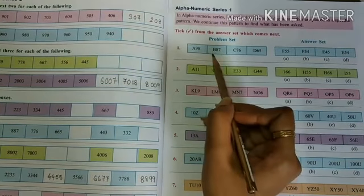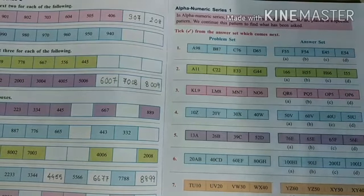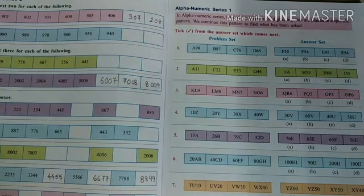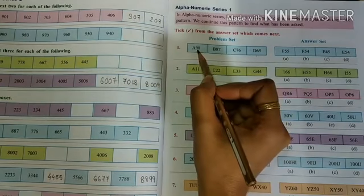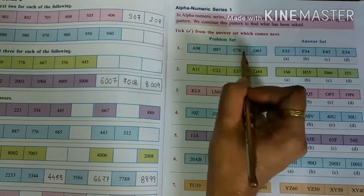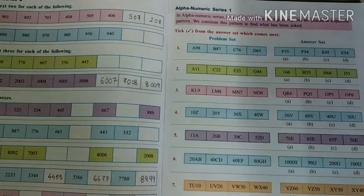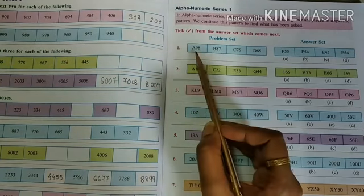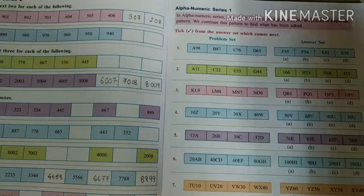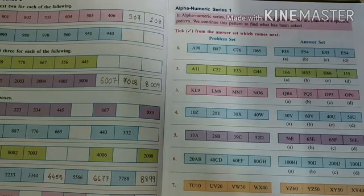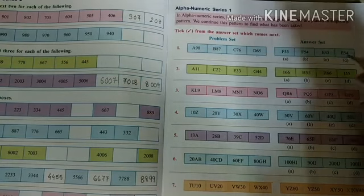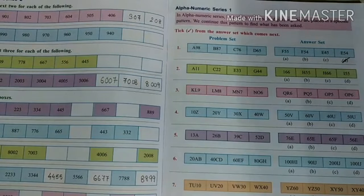After A comes B, then C, then D — the letters continue in order. In the numbers, you can see the numbers are decreasing: 9, then 8, then 7, then 6; and 8, then 7, then 6, then 5. You have to continue the pattern A, B, C, D, then E. The next alphabet will be E, and the numbers will be 5, 4. So the answer is D: E, 5, 4.